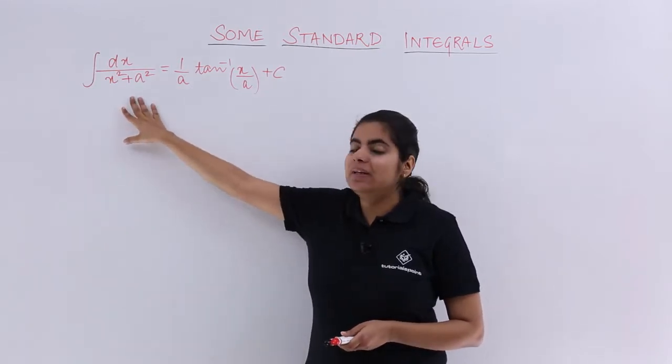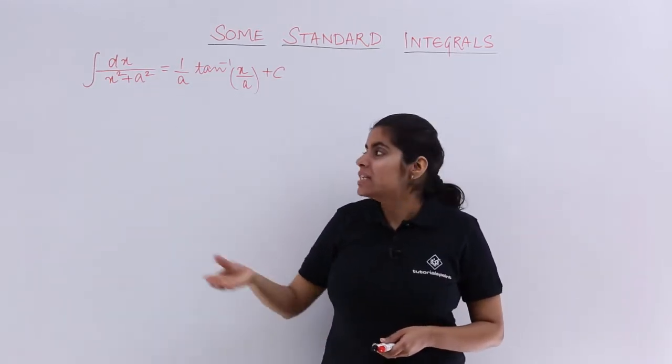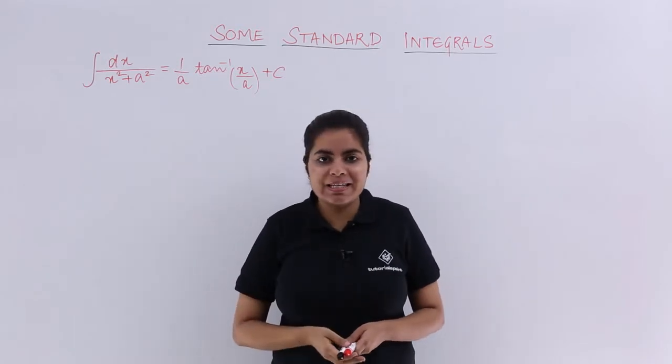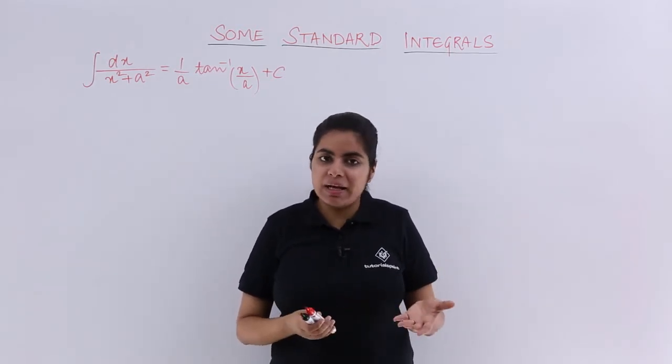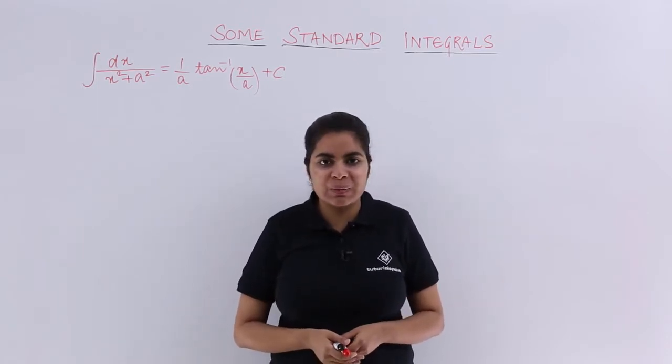Now in this kind of integral, I have to think of what can I do. See, this is not x square minus a square that you can apply the identity that we studied. That x minus a multiply x plus a is equal to x square minus a square.